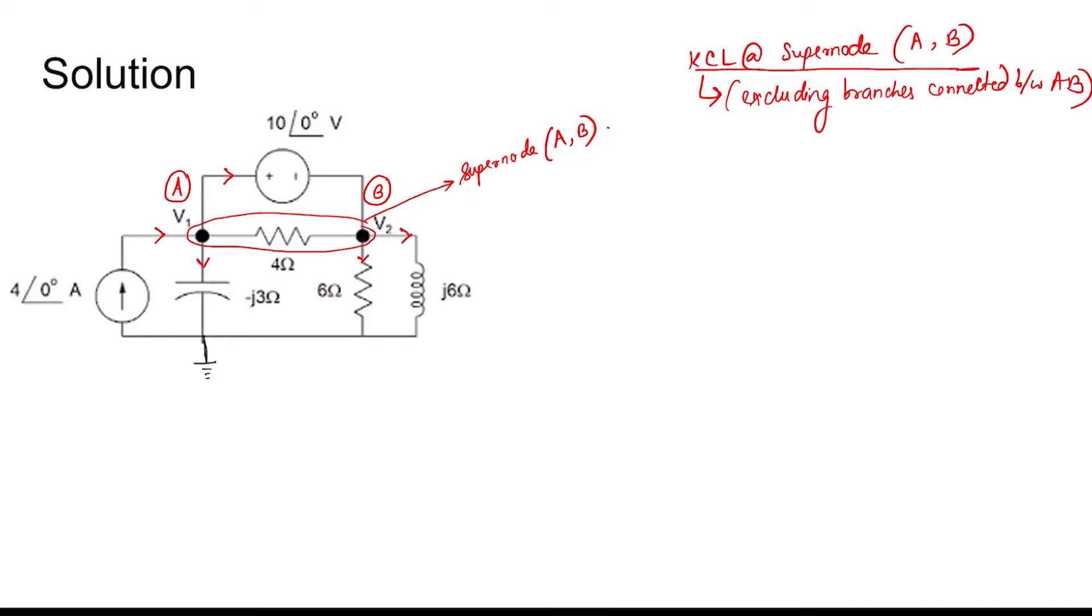So now the current going into node a b, that is the super node, some current is going in which is four, which equals the current going out. Now this branch is excluded and this branch is excluded because it is part of the super node. It is connected between the super nodes. This branch, this branch, this branch, and this branch are considered. So the current flowing in is four and going out is v1 divided by minus j3 plus v2 divided by 6 plus v2 divided by j6. v1 minus v2 equal to 10.